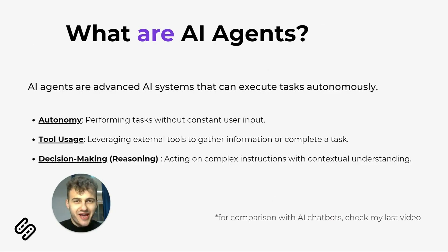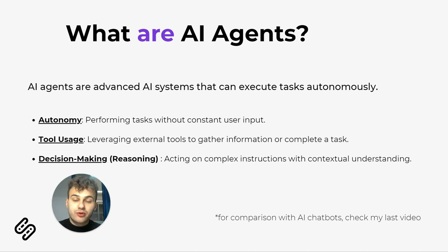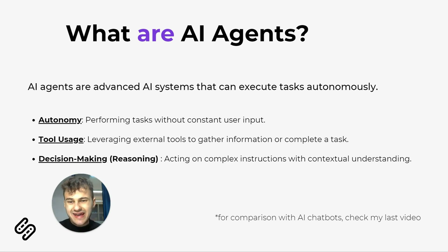So what are AI agents at all? Agents are advanced AI systems that can execute tasks autonomously. We can differentiate them by autonomy because they perform tasks without constant user input, like chatbots, for example. They can use tools and they can do reasoning or planning.